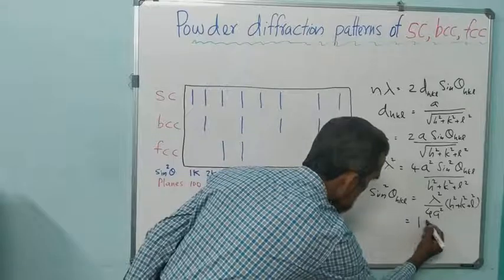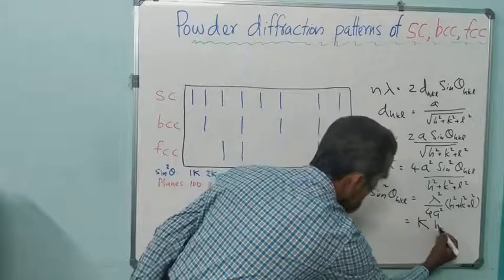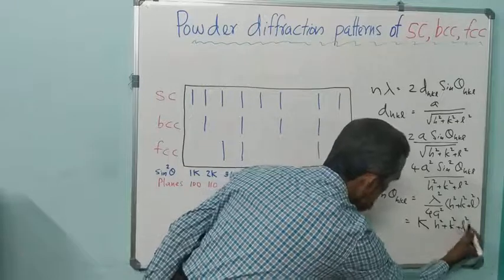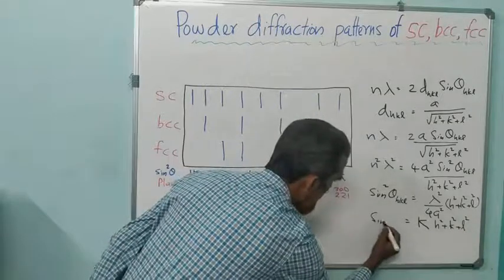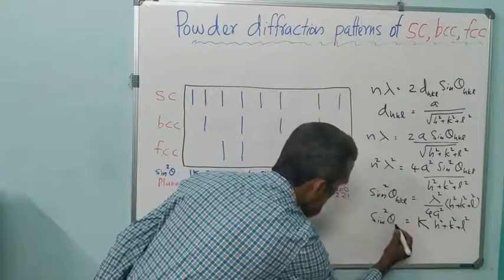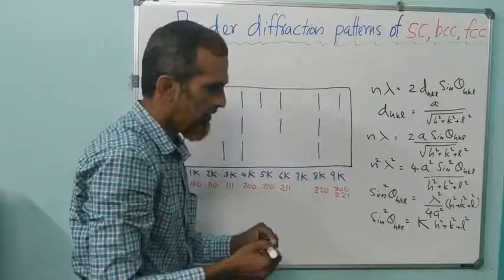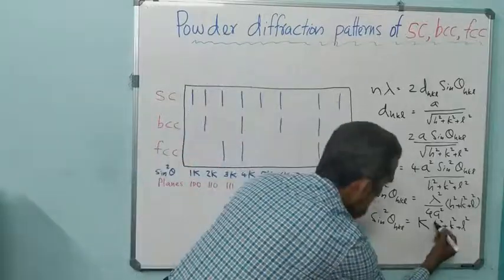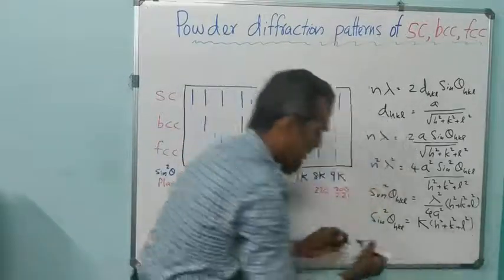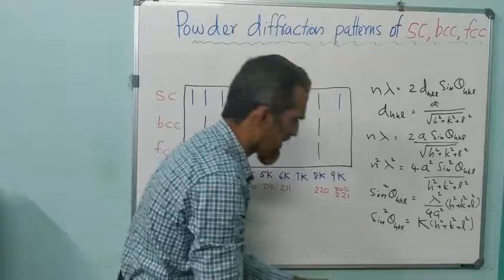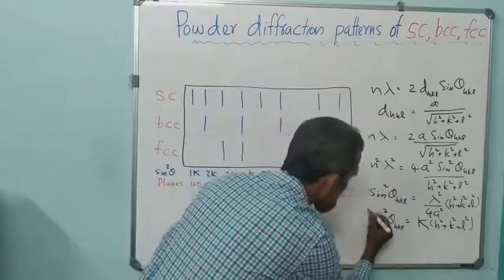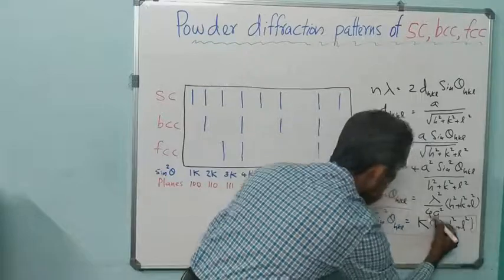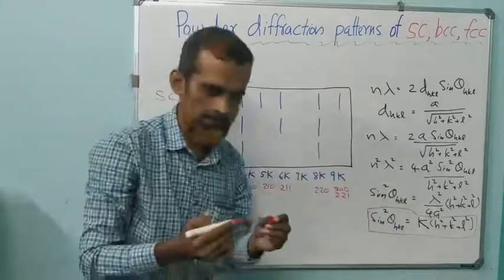We write this as: sin²θ_HKL = K × (H² + K² + L²), where K = λ²/4a² is a constant. Keep this equation in mind. Using this equation we can do analysis of powder diffraction patterns of various crystals.